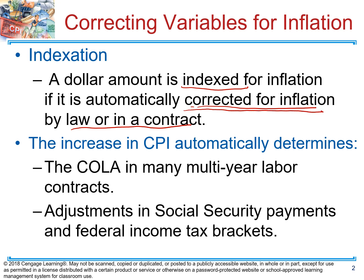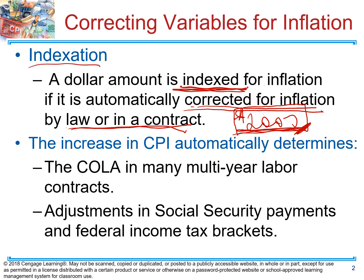So if you are renting something and your rent is $2,000 a month this year, and we had a certain inflation rate over the year, then by law or if it's mentioned in the contract, this dollar amount has to be indexed for inflation for the next year — so you're going to have to pay a little bit more. Indexation is based on the Consumer Price Index, not the GDP deflator.